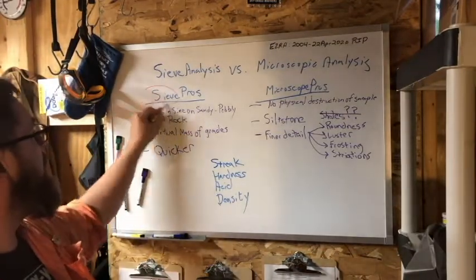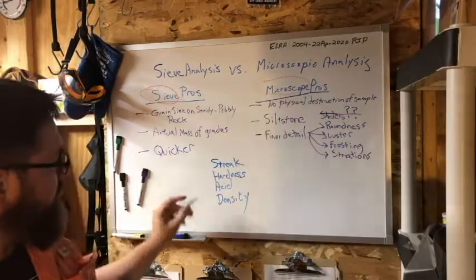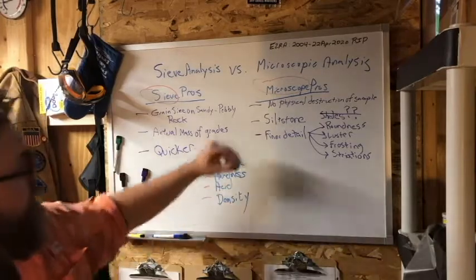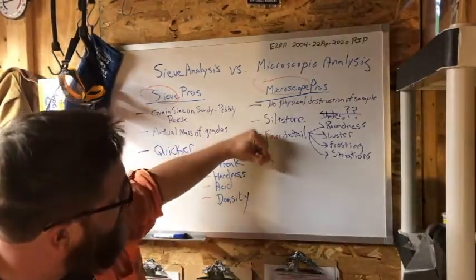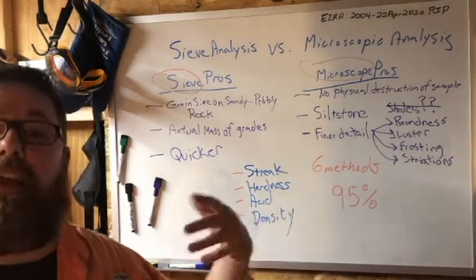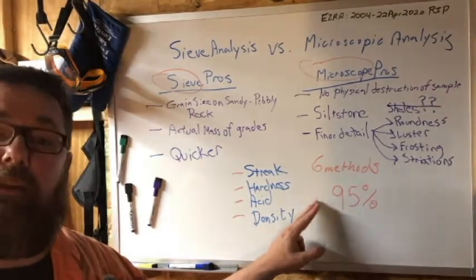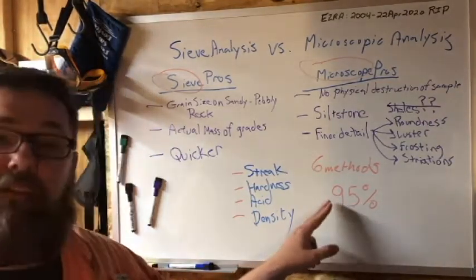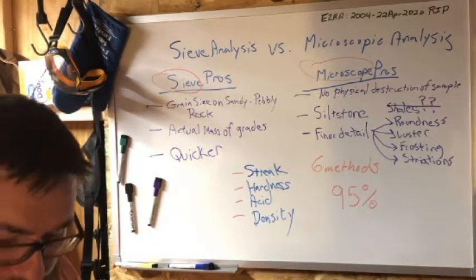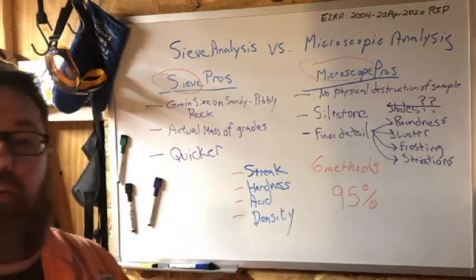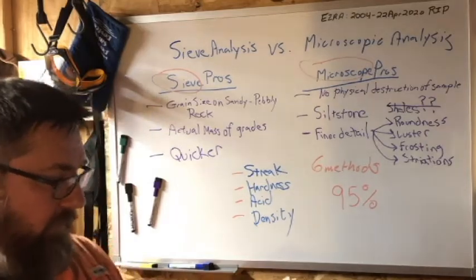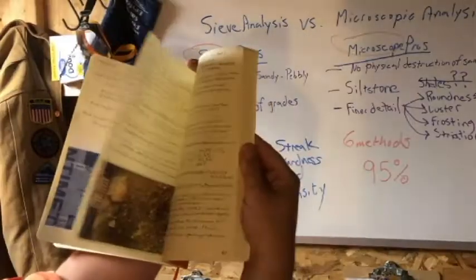Using the sieve, the microscope, and these four additional things—just using these basic six methods: the sieve, the microscope, streak, hardness, acid, density—without even creating a thin section, I can determine the mineralogy and makeup of about 95% of the rocks I look at. There are some things in my books where I can't—they're so small or they look too similar because a lot of minerals look alike. You would need detailed petrographic analysis. But generally I can figure it out, classify it pretty easily.